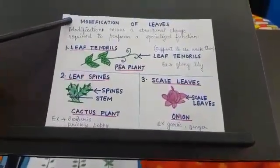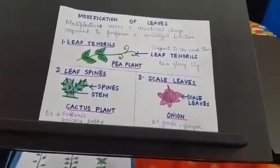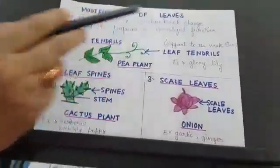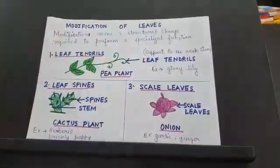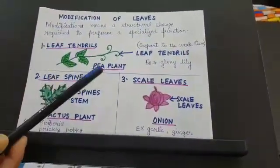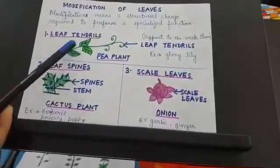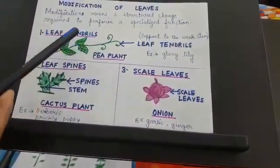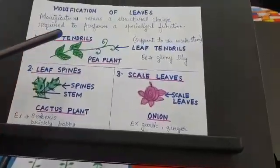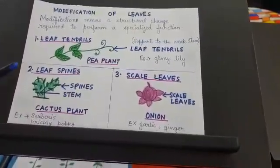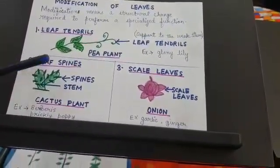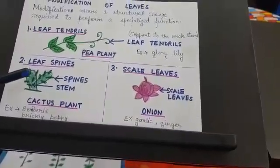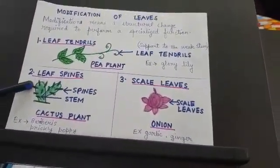Next topic is modification of leaves. Modification means a structural change required to perform a specialized function. In the pea plant, leaves are modified into leaf tendrils — thin, coiled, thread-like structures that provide support to the weak stem. The second example is leaf spines. In a cactus plant, leaves are modified into spines. Spines reduce the loss of water through transpiration and also provide protection from animals.